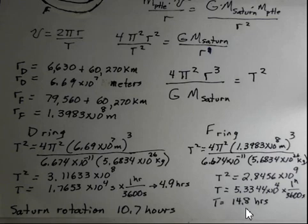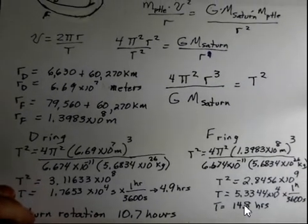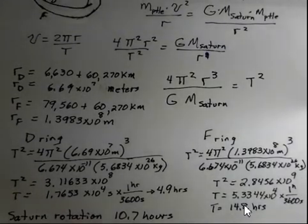The D ring particle is only taking about 5 hours. The F ring is moving slower than the planet rotation. So again, check my calculations with your calculator. Ask your instructor if you have questions on this. But we're able to use the concept of centripetal force and the force due to gravitation and calculate the period for these particles moving around Saturn.